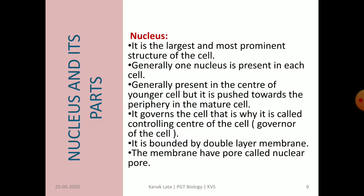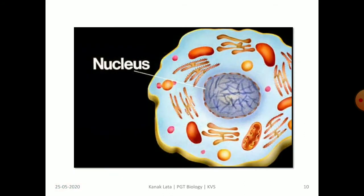The next topic is nucleus. It is the largest and most prominent structure of the cell and can be easily observed under a compound microscope. Generally, one nucleus is present in each cell. It is present in the center of younger cells but is positioned toward the periphery in mature cells. It is called the governor of the cell because it governs and controls the cell. The nucleus is bounded by a double-layer membrane which has pores called nuclear pores.